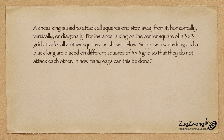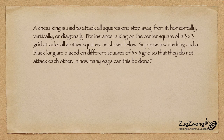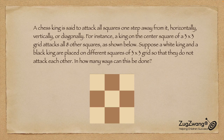A chess king is said to attack all the squares one step away from it — horizontally, vertically, and diagonally. For someone who knows how a chess king moves, this pretty much covers that. For instance, a king in the center of a three by three grid attacks all eight squares around it, as shown. Basically, all those surrounding squares are controlled by the king.